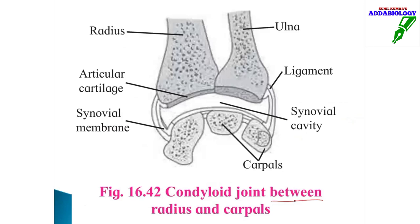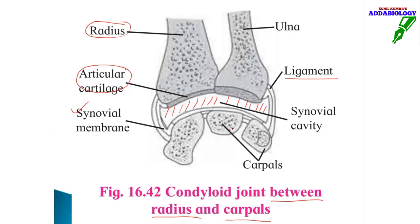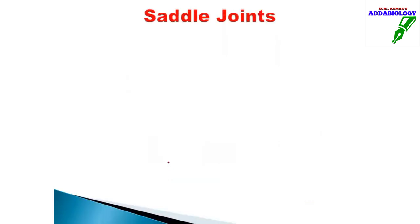Looking at the condyloid joint diagram: this is the radius, with articulating cartilage surface, ligament for bone-to-bone attachment, synovial cavity surrounded by synovial membrane, and the carpal bone. This joint shows forward, backward, and side-to-side movement, but most importantly, in condyloid joint there is no rotation.